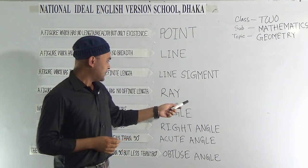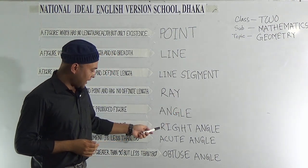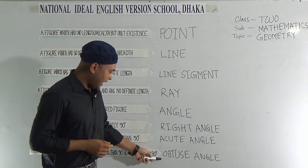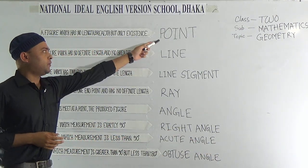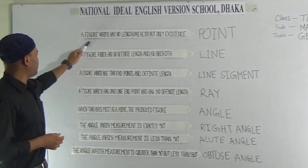Today we will discuss some basic topics of geometry such as point, line, line segment, ray, angle, right angle, acute angle, and obtuse angle.